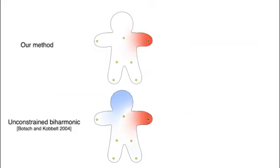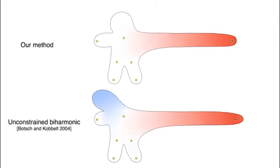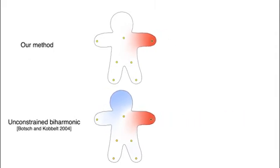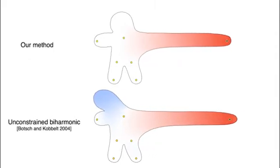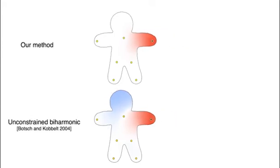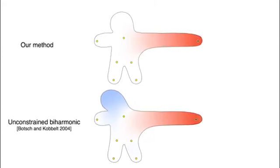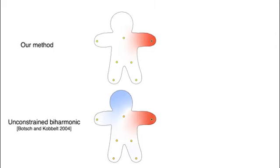By construction, our weights are always positive. Positive weights are necessary to maintain an intuitive response to the user's deformation. The blue region in the bottom animation denotes negative weights and moves in the opposite direction of the translated handle.